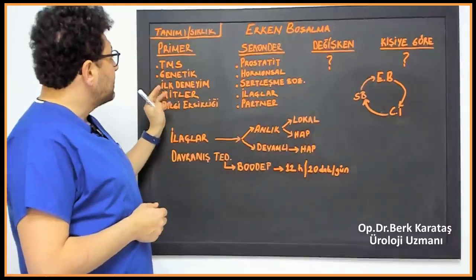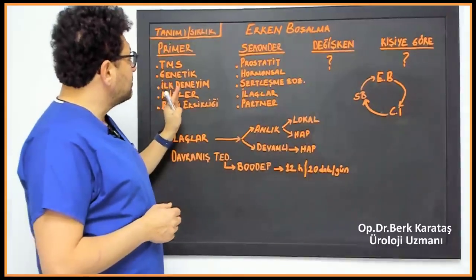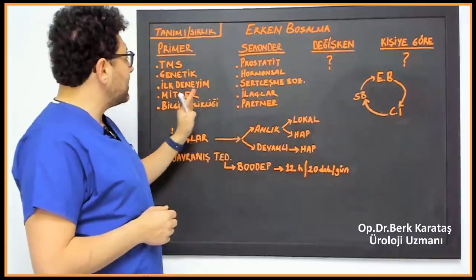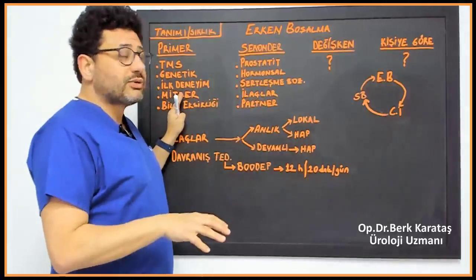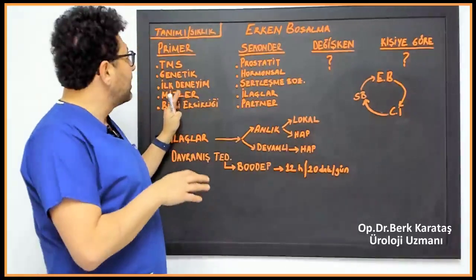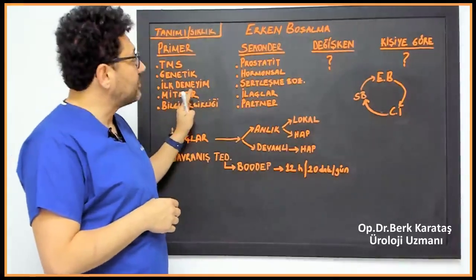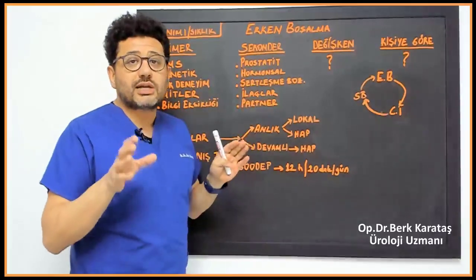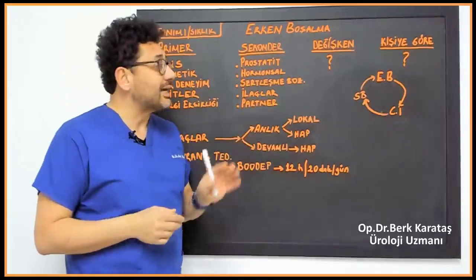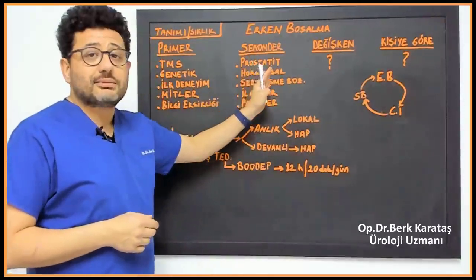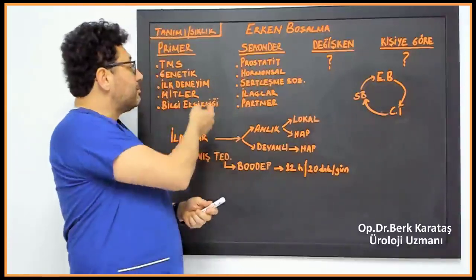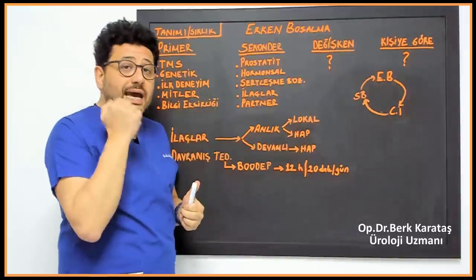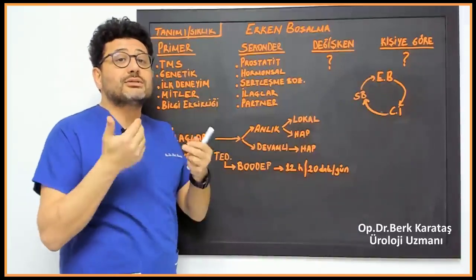Now the most important distinction is whether this premature ejaculation is primary or secondary. I mean, has it been there from the beginning? Has it been present throughout your entire sex life? For example, the person has been married for 10 years, has there been premature ejaculation for 10 years? Or has everything gone well for 9.5 years, and for the last 6 months? If you have recently had a premature ejaculation, this may be an indication of a disease. If there is premature ejaculation from the beginning, this is not an indication of a disease.